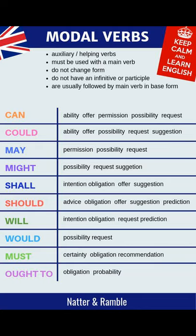The most common modal verbs are: can, could, may, might, shall, should, will, would, must, and ought to. Modal verbs affect the main verb they are associated with by expressing the level of possibility, ability, permission, and obligation for that action or state. Modal auxiliary verbs also act differently to other verbs.